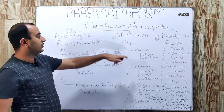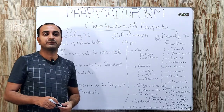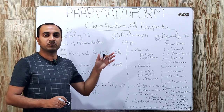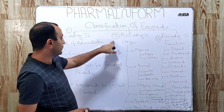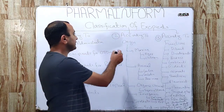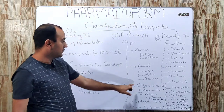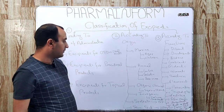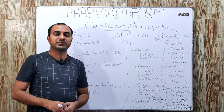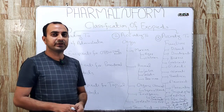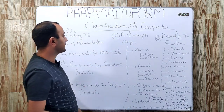The next classification is according to origin — we classify our excipients according to the origin from where they are derived. Here we classify excipients as: marine origin, animal origin, organic chemicals, inorganic chemicals, synthetic, and semi-synthetic excipients.